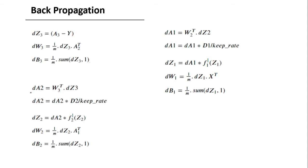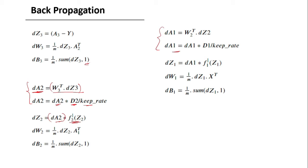Because we dropped certain neurons in the forward propagation, we need to drop the exact same neurons in the backward propagation as well. In our backward propagation equations, we add two additional steps. The term dA2 is computed and then multiplied by the D2 mask matrix generated for that iteration, and then divided by the keep_rate. We do the same for the other hidden layer but not the output layer. These are the two changes needed in forward and backward propagation to implement dropout.